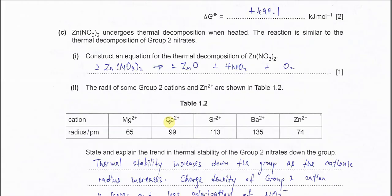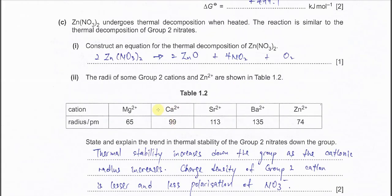Part C: zinc nitrate undergoes thermal decomposition when heated, a reaction similar to group 2 nitrates. Construct the equation for the thermal decomposition of zinc nitrate. Since this one is similar to group 2 nitrate, it will form three products: the oxide, NO₂, and O₂. The ratio is 2:4:1.